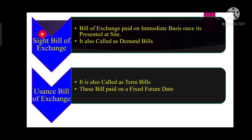The sight bill of exchange — 'sight' means immediate, or we can say on demand. The sight bill is also called a demand bill. Whenever the documents are presented at the drawee bank counter, the payment should be made on an immediate basis. In simple terms, it is payable on demand or whenever it is presented. The bill has no particular mentioned due date or time for payment, so the debtor must make the payment whenever the bill is presented.